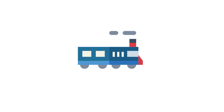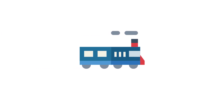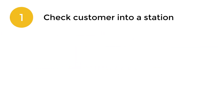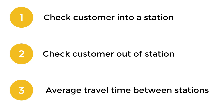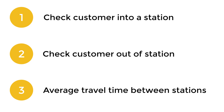Feel free to check out my Patreon to get access to my private Discord channel. So we need to design an underground system that will do three different things for us. First, it'll check someone into a station. Second, it'll check someone out of a station. And then finally, it will get the average time to travel between a start and end station.